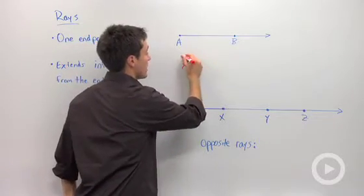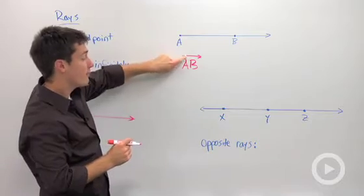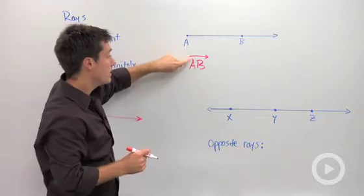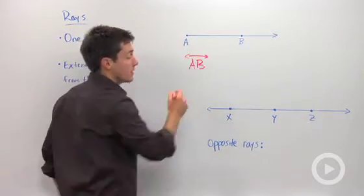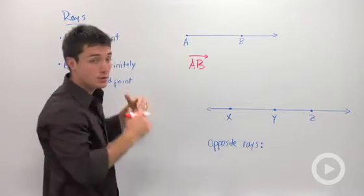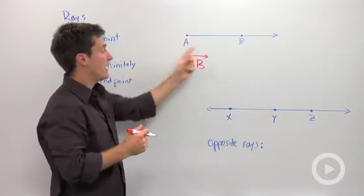So I'm going to label this ray AB as a line, but I only have one arrow, so the arrow is going to be over the B because my endpoint is A, and notice I do not have an arrow over the A, which tells the geometry student or the geometry teacher that this ray starts at A and passes through B.